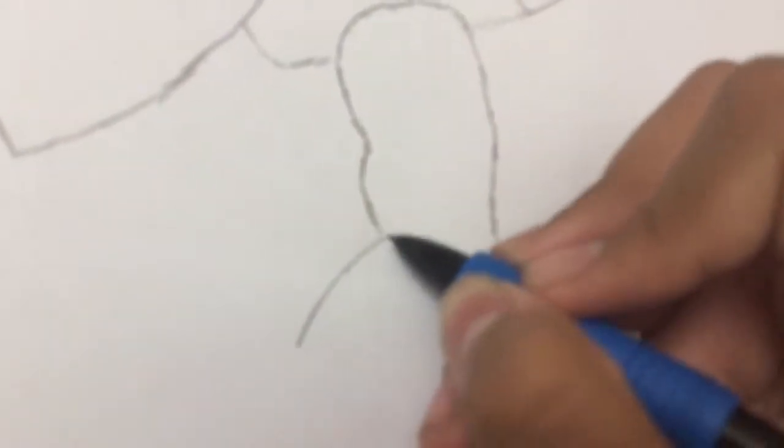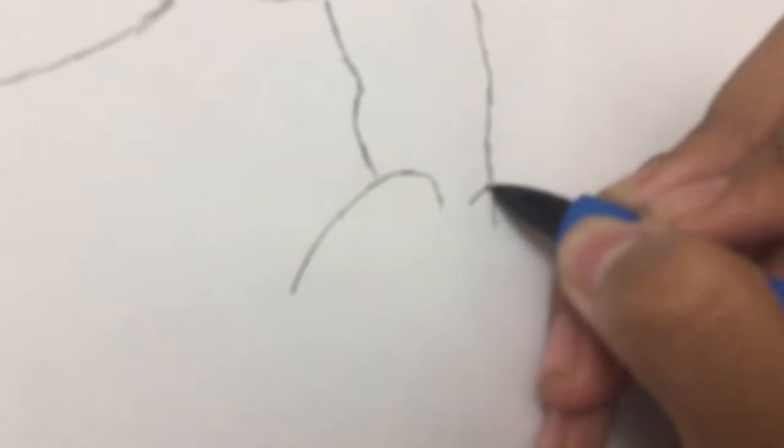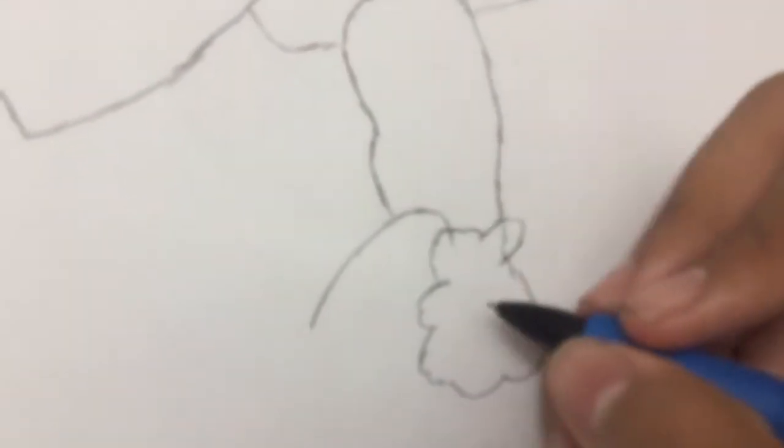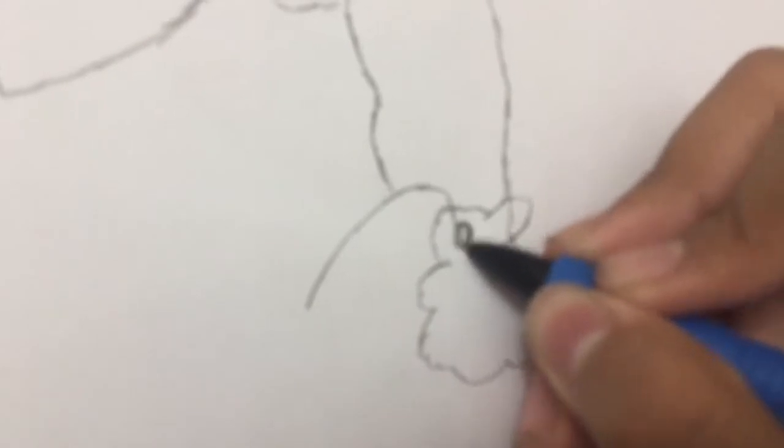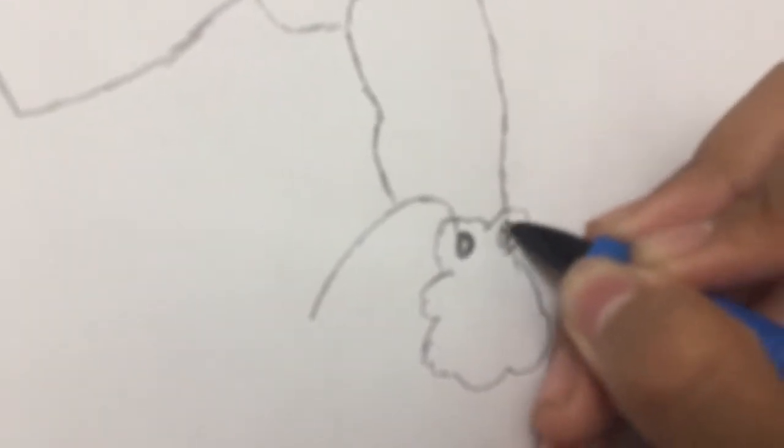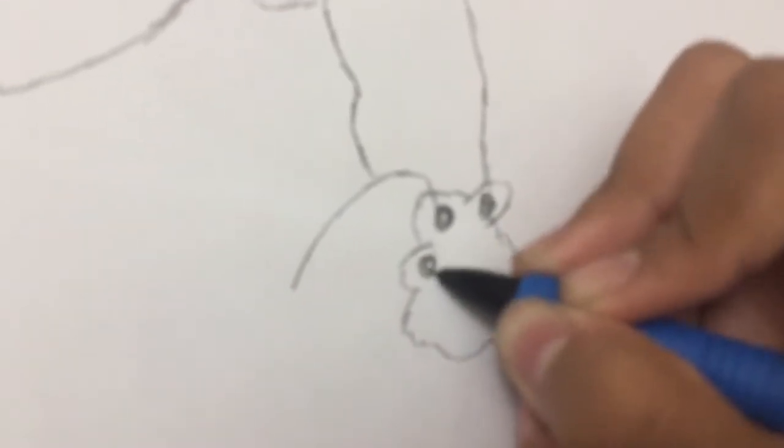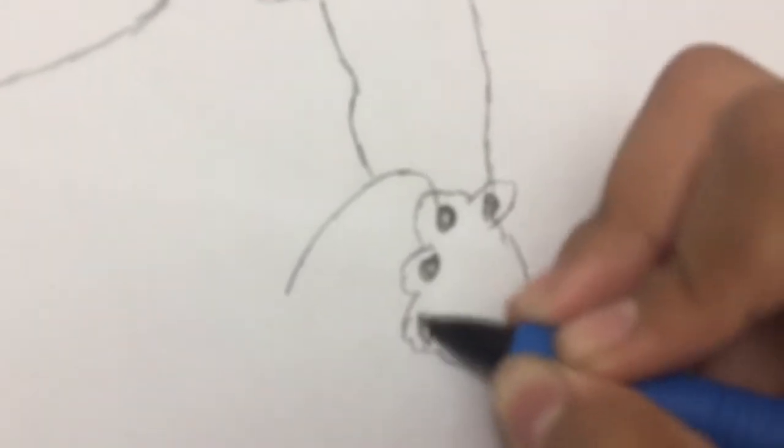And we're going to draw his paw right here, like this. And draw these curves. And then there are like circles, like this, on this part. And circle, and there's a big circle in the middle, like this.